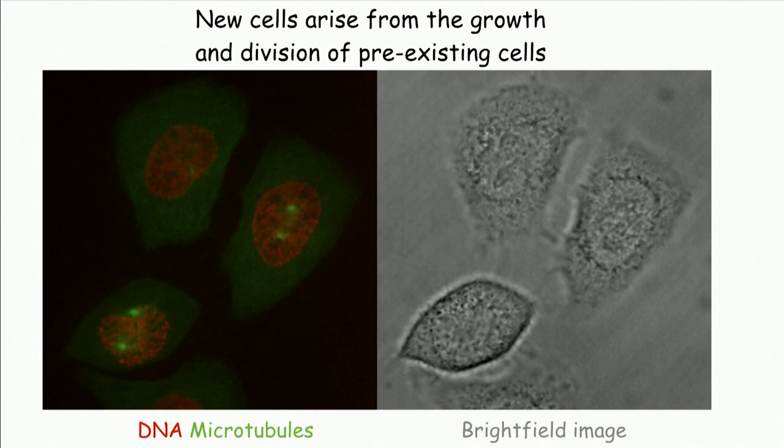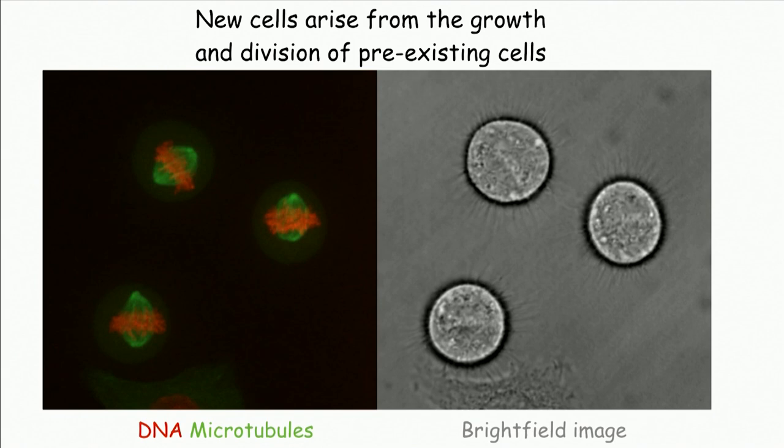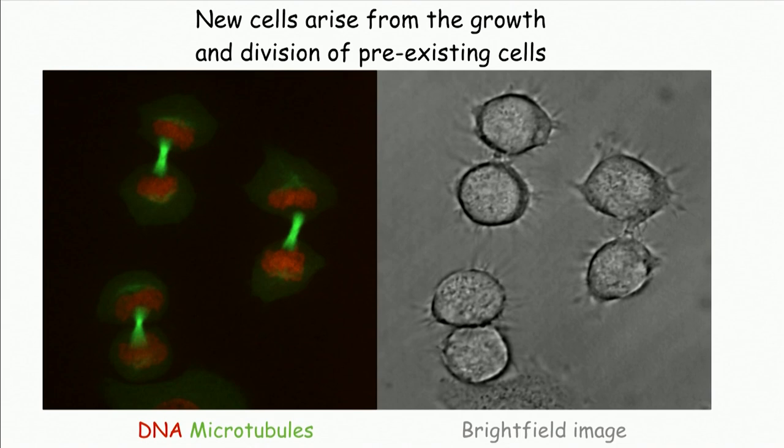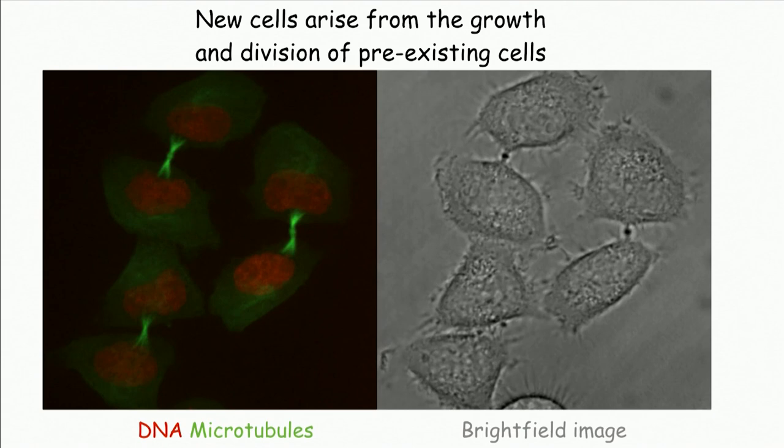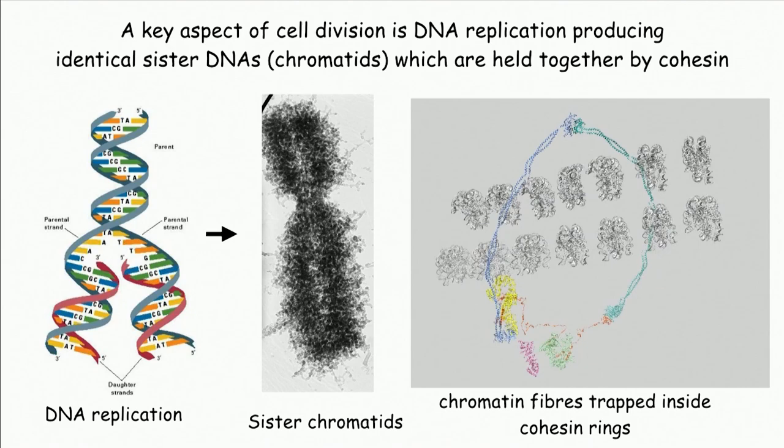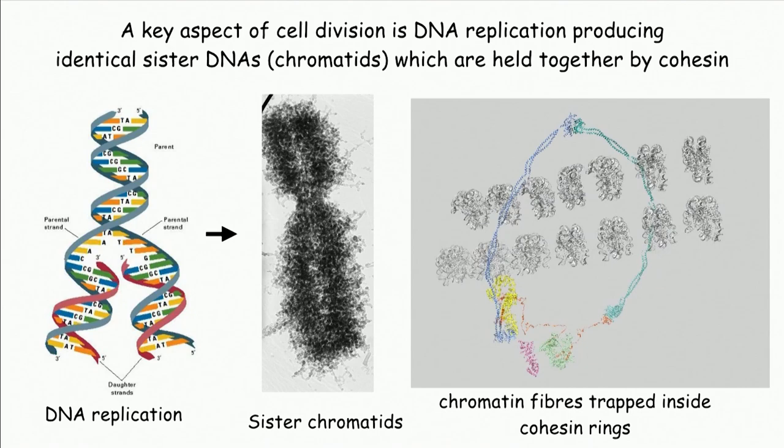This starts with one of the great discoveries in biology: that we're all composed of cells, and possibly the next important discovery was that those cells cannot arise de novo — new cells only arise from the growth and division of pre-existing cells. This is one of the most powerful ideas in biology; it's the basis of all inheritance.